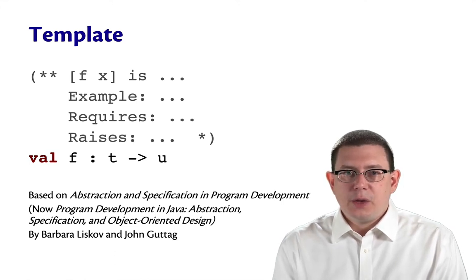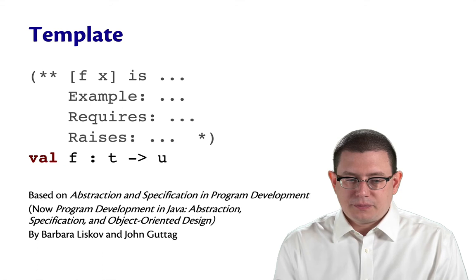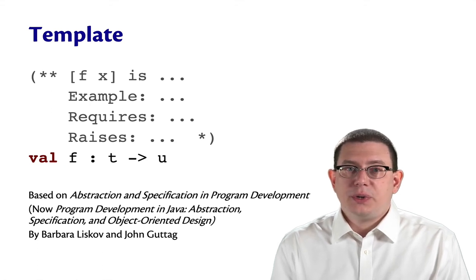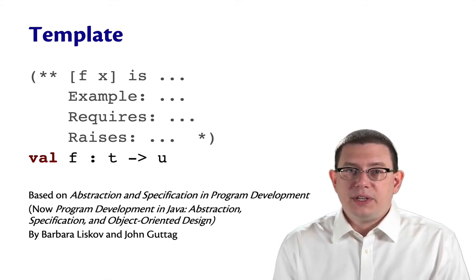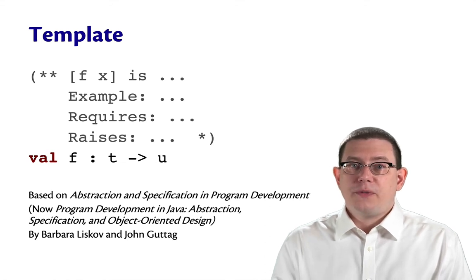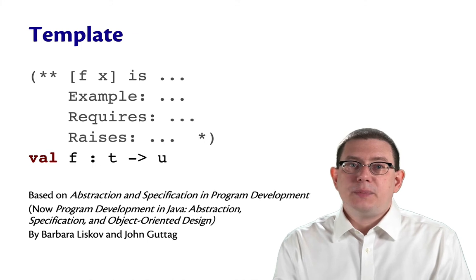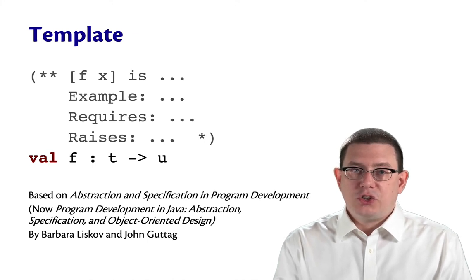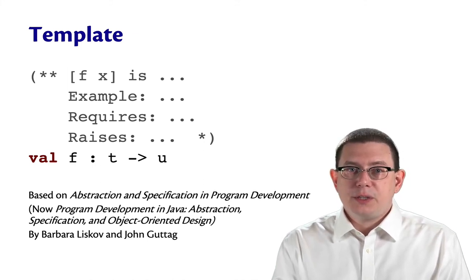We're going to talk in more detail about each of those pieces next. The specification is written in a .mli file above the declaration of a name. That declaration also provides the type of the function, so none of those types needs to be part of the specification itself. They're written separately as part of the source code.